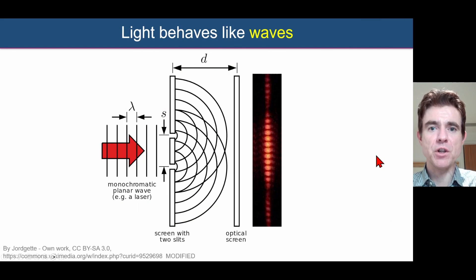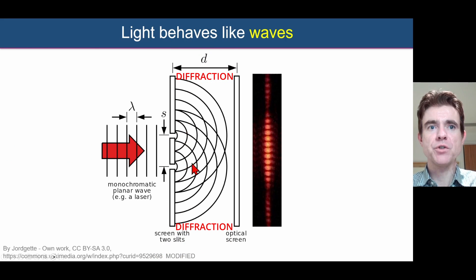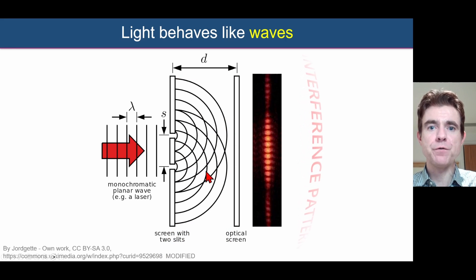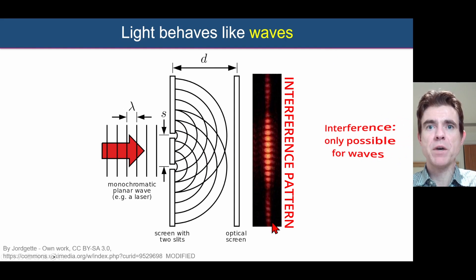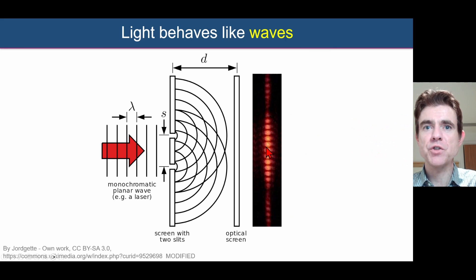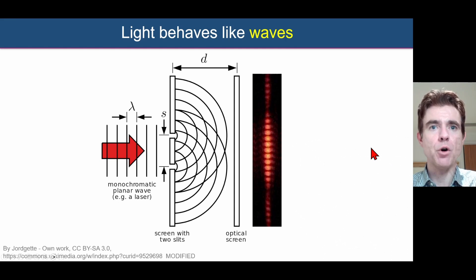If we consider light — for example, laser light incident on a screen with two slits — we again get the very characteristic diffraction patterns from those two slits, and as a result we have interference of those two diffraction patterns, resulting in an interference pattern on the right-hand side. We see the very distinctive features of constructive and destructive interference of the light waves.